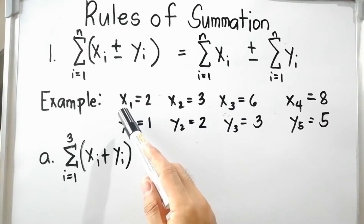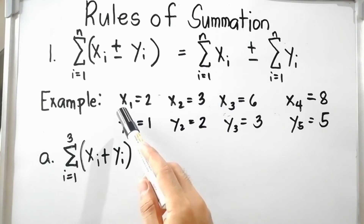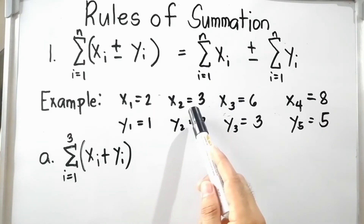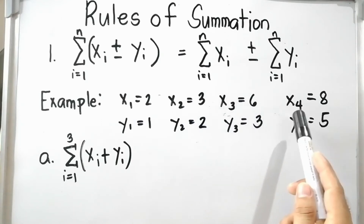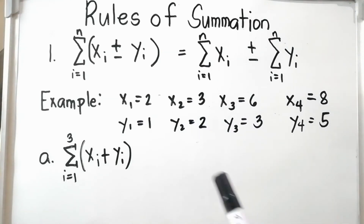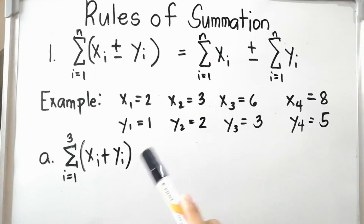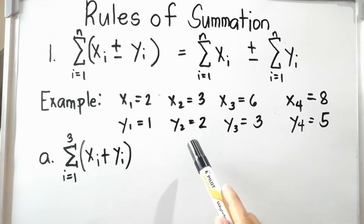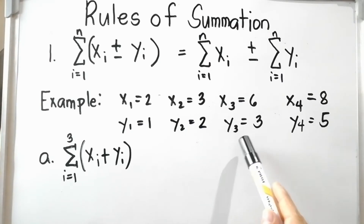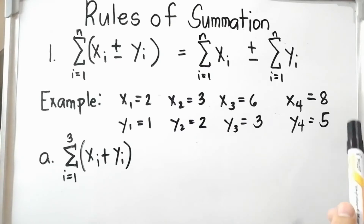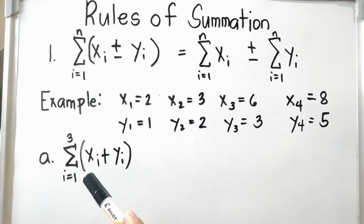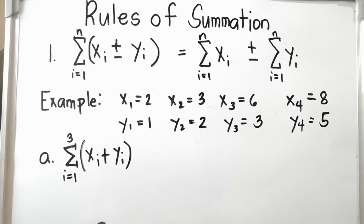For the example, the values of x are: x sub 1 equals 2, x sub 2 equals 3, x sub 3 equals 6, x sub 4 equals 8. For the values of y: y sub 1 equals 1, y sub 2 equals 2, y sub 3 equals 3, y sub 4 equals 5. Let us solve the summation of the sum and difference of two terms.